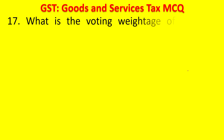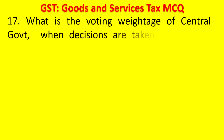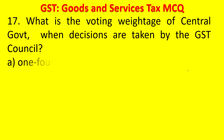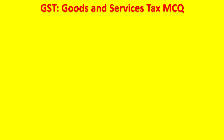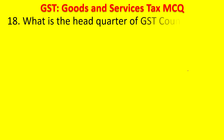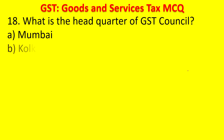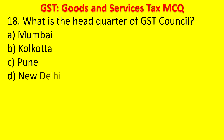Question 17: What is the voting weightage of the central government in the GST Council? Options: one-fourth, one-third, two-third, equal. The answer is one-third. State governments hold two-thirds and the central government holds one-third. The headquarter of the GST Council is in New Delhi.